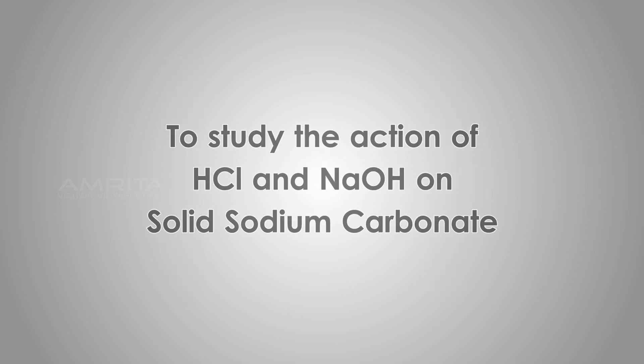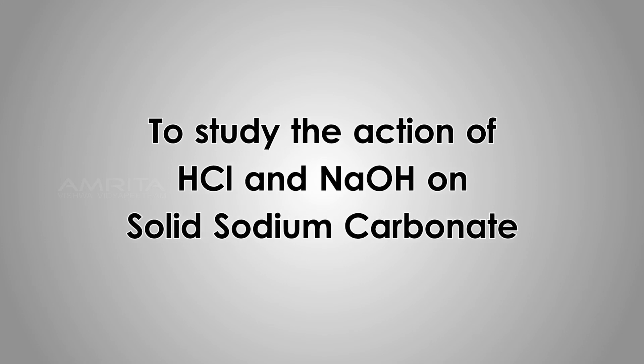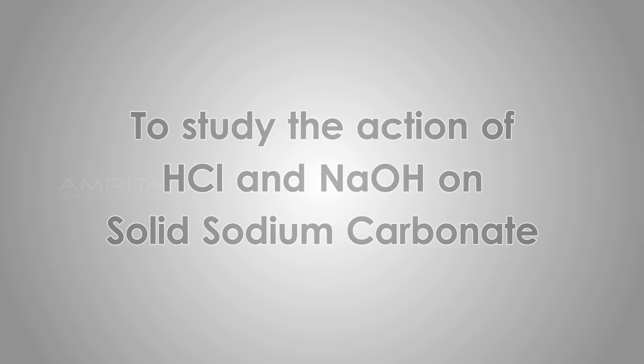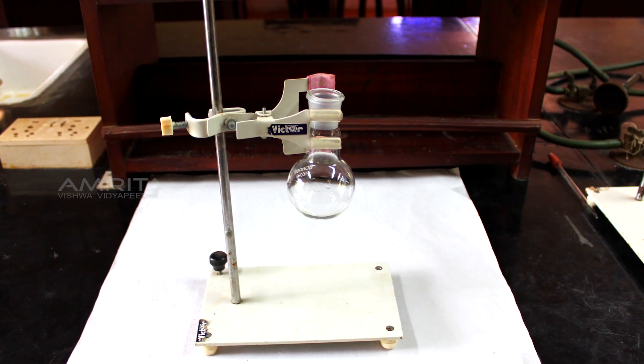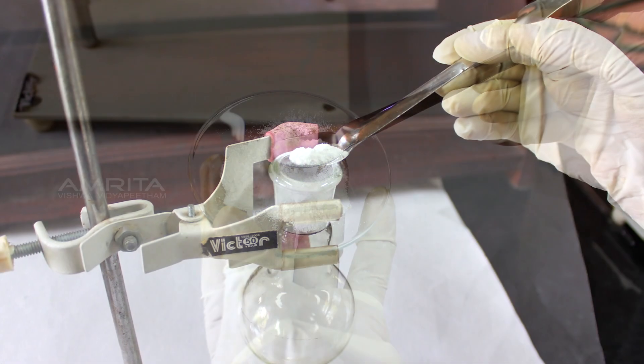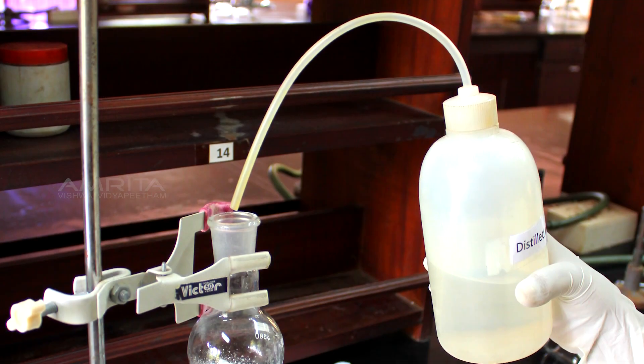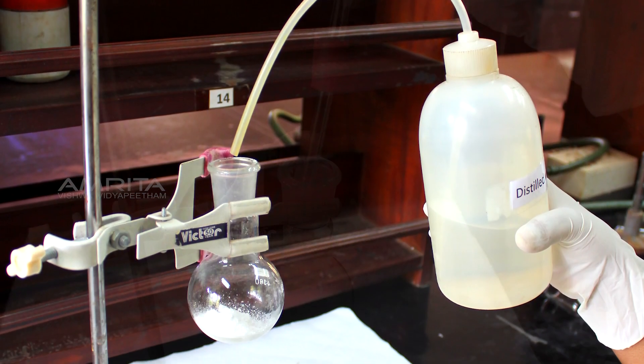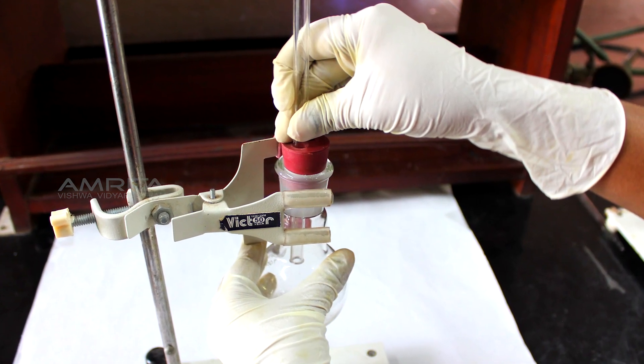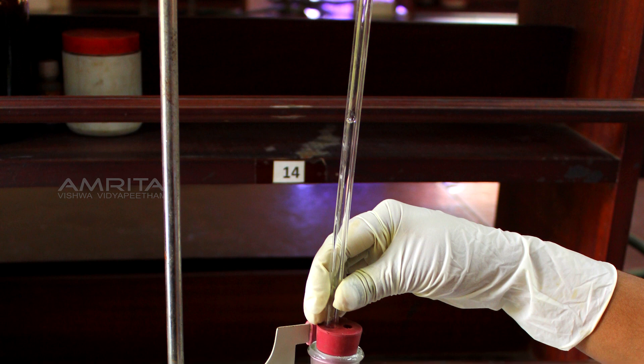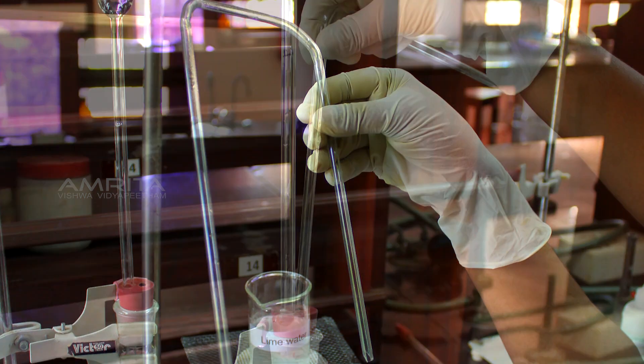To study the action of HCl and NaOH on solid sodium carbonate, first clamp the round bottom flask to the stand and add a small quantity of sodium carbonate and a few drops of distilled water into it. Close the mouth of the flask with a double-bored cork and insert a thistle funnel and a bent tube into the different holes of the rubber cork.